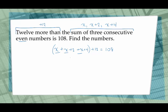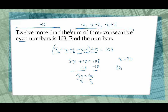Subtract 18 from both sides: 3x equals 90. Divide both sides by 3: x equals 30, which is even. So my three consecutive even integers are 30, 32, and 34. Checking: 30 plus 32 is 62, plus 34 is 96, and 12 more than that is 108. These are our three consecutive even numbers.